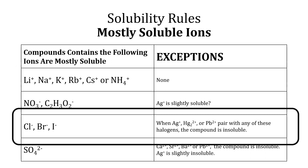Salts of chloride ions, bromide ions, and iodide ions are mostly soluble unless paired with silver ion, mercury(I) ion, or lead(II) ion. In that case, the compound is insoluble.